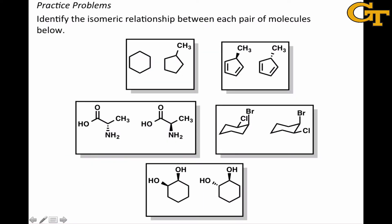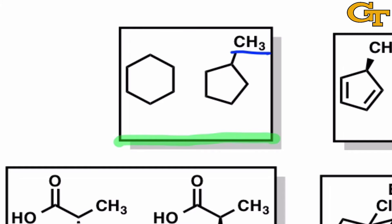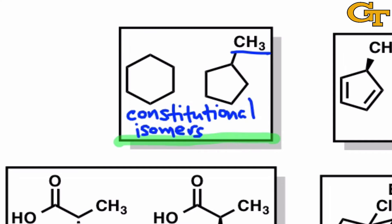Our task here is to identify the isomeric relationship between each pair of molecules. All of these have the same numbers and types of atoms, so none of them are entirely different — they're all isomers of some kind. In the first example, the connectivity of the two molecules is different. There's a methyl group in the right-hand structure where there isn't one in the left-hand structure, and we have a five-membered ring on the right where there's a six-membered ring on the left. That means we can immediately conclude that these are constitutional isomers.